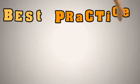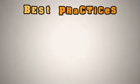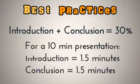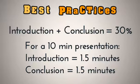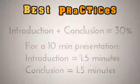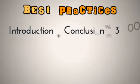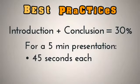A good rule of thumb is that the introduction and conclusion should take up no more than 30% of your presentation time. This means in a 10-minute presentation your introduction and conclusion should each be about a minute and a half. Not a lot of time, is it? In a 5-minute presentation the introduction and conclusion would take up no more than 45 seconds each.